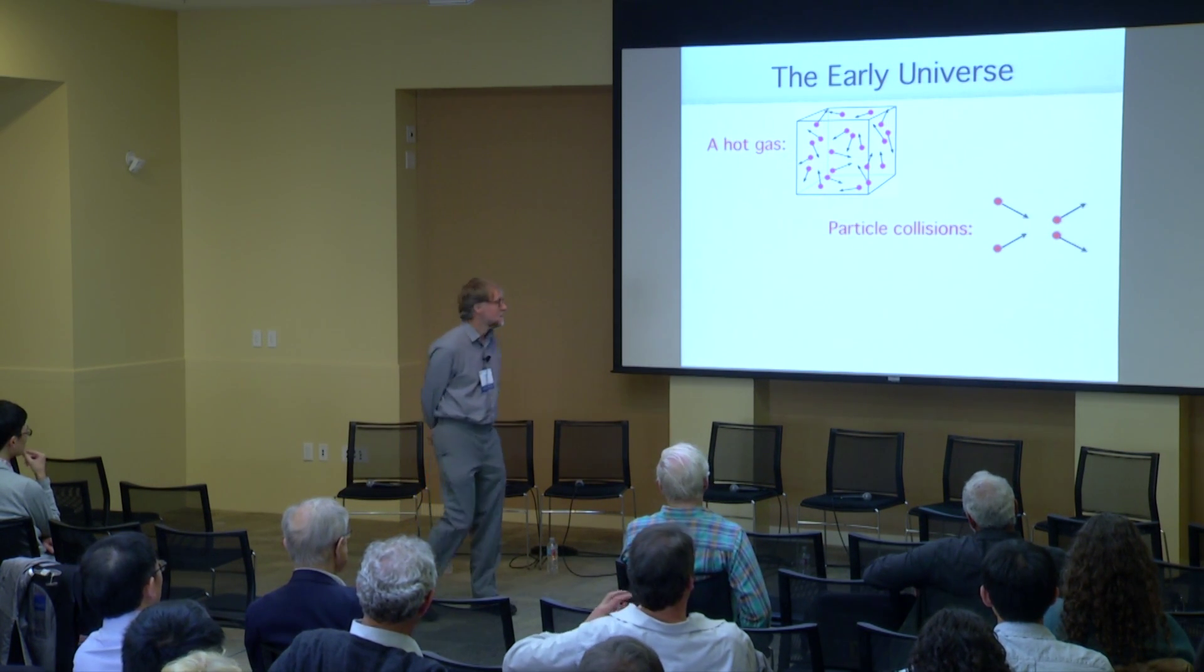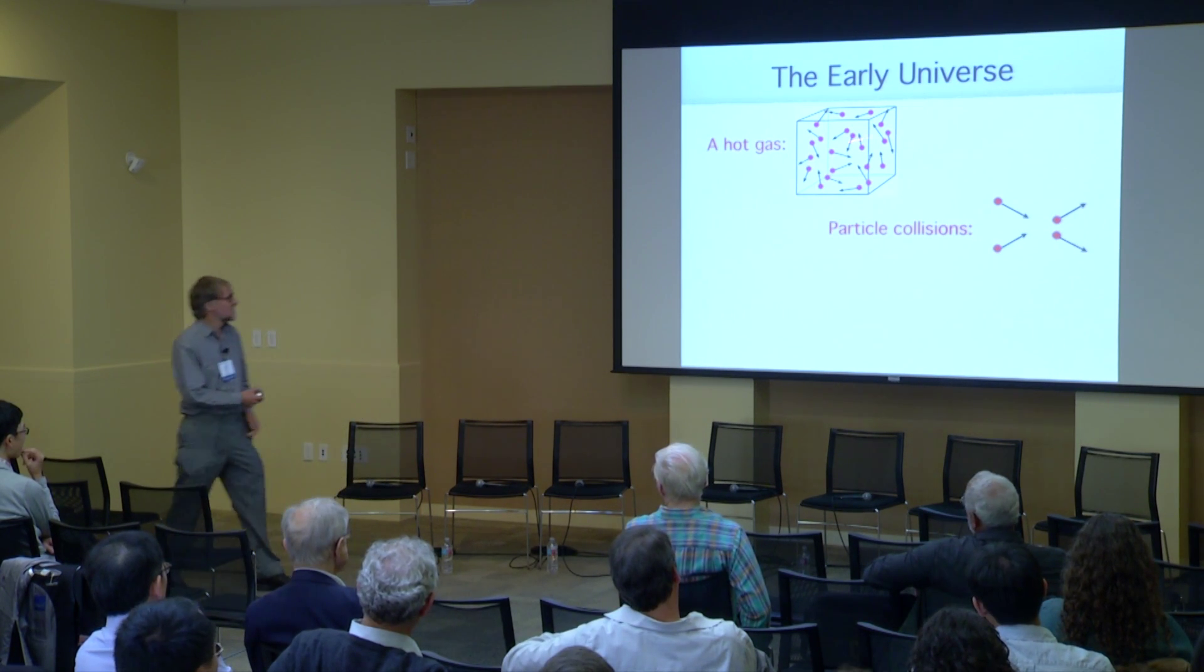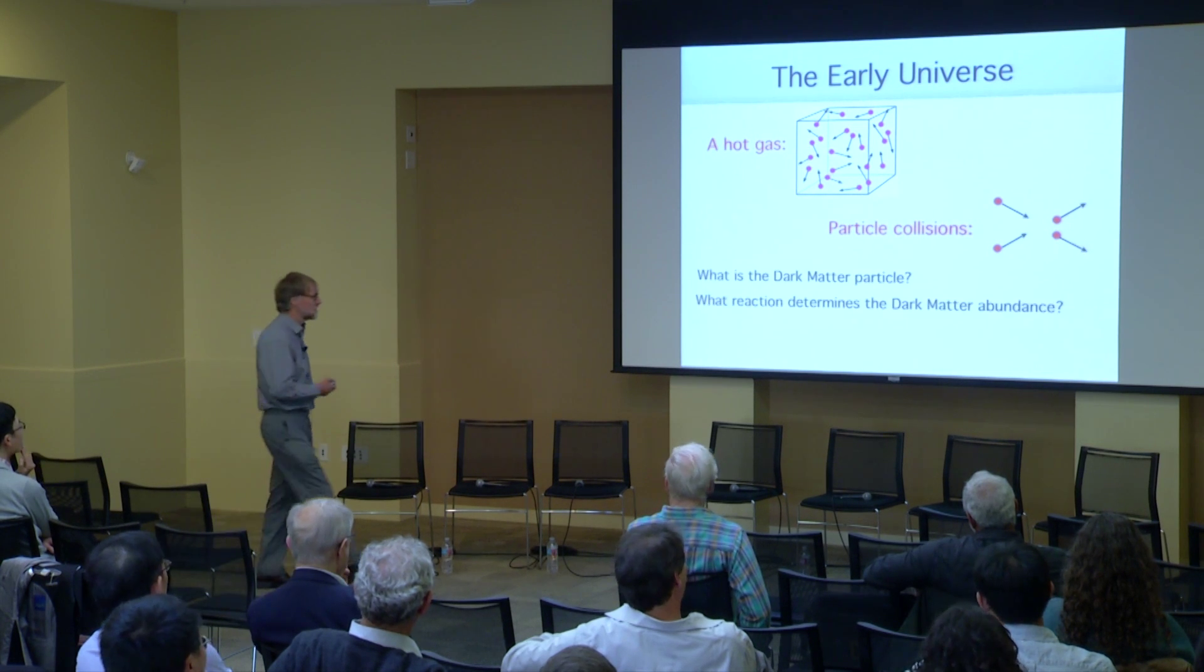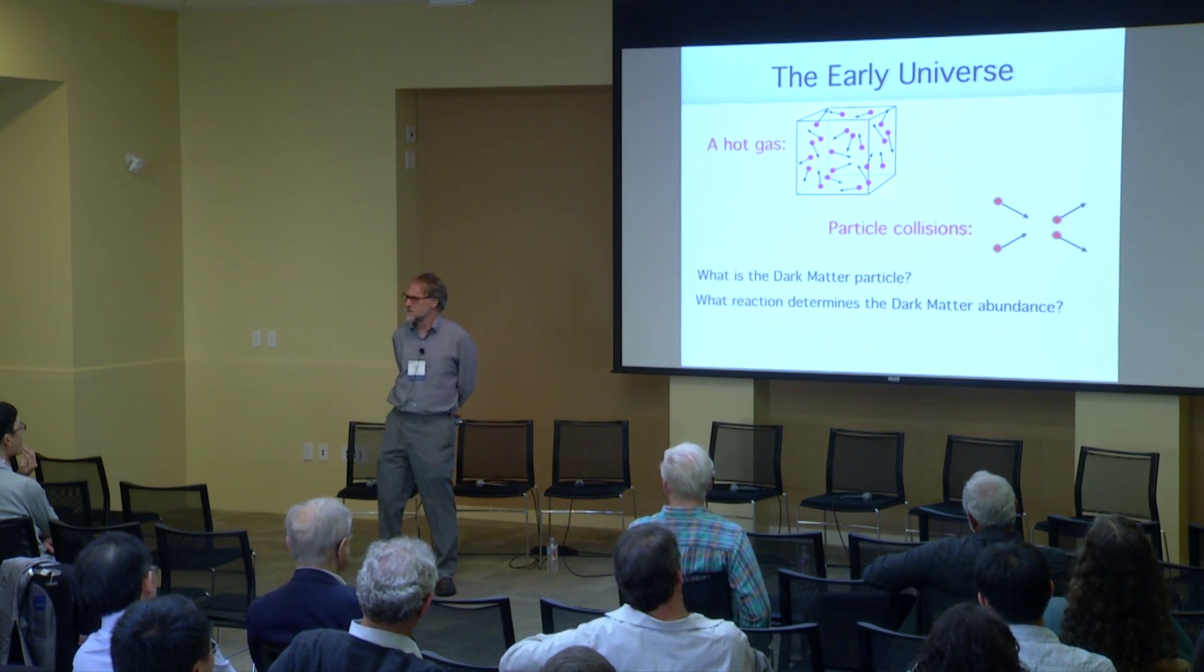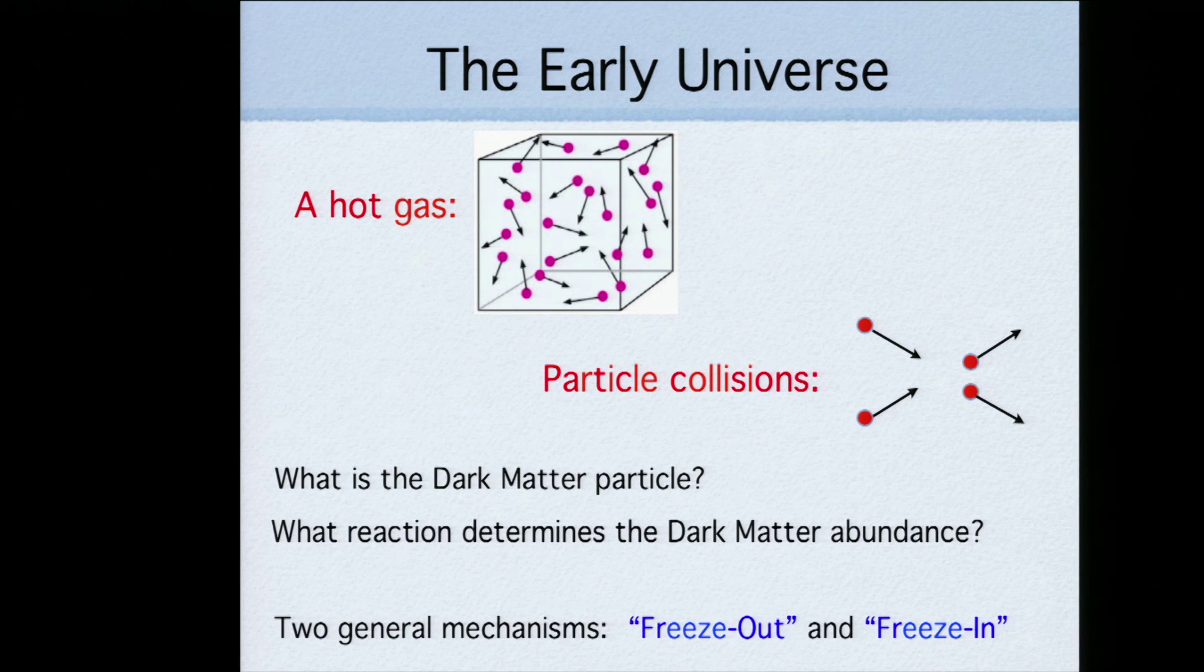Okay, so the early universe. So the early universe is a hot gas. We've got particles colliding. All the red dots here are standard model particles. Everything's in thermal equilibrium at some high temperature T. The great thing about thermal equilibrium is that it erases initial conditions and you can hope to do a calculation at somewhat low temperatures. What is the dark matter? What is the reaction that determines the dark matter abundance? These are the key questions that we need to answer.